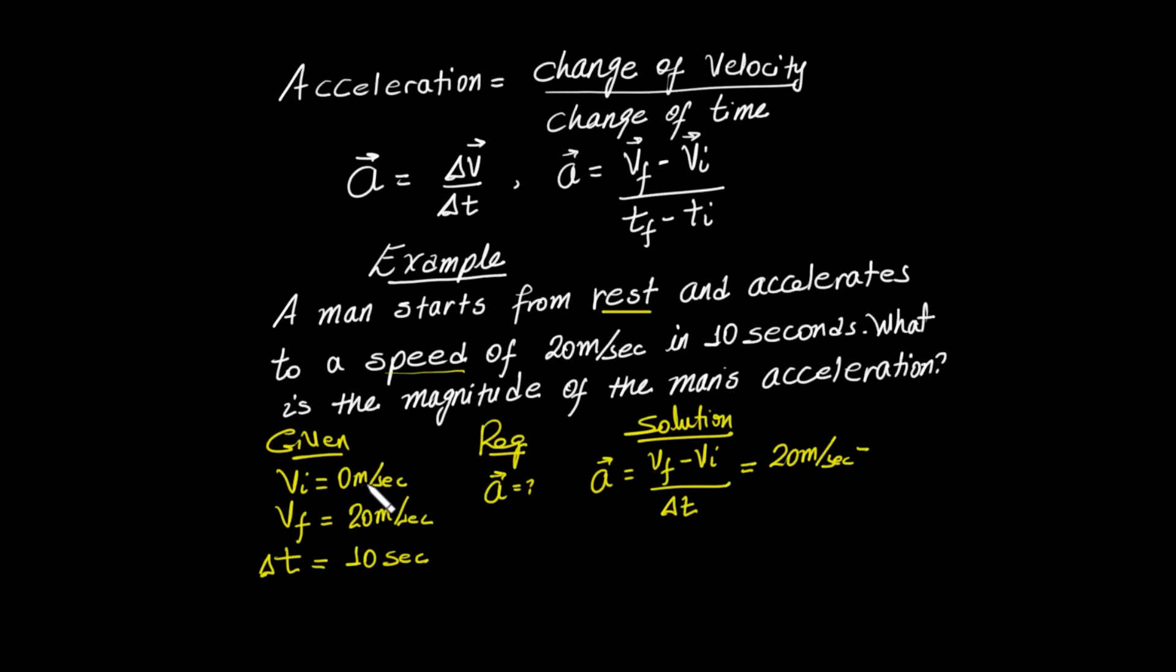We find the final velocity is 20 meters per second, initial velocity is 0 meters per second. Time is 10 seconds. So acceleration equals 20 minus 0, which is 20 meters per second, divided by 10 seconds.